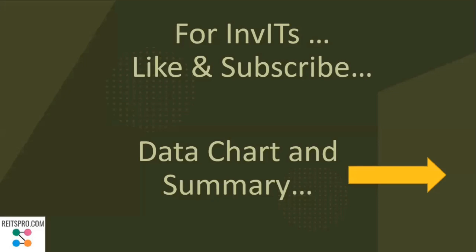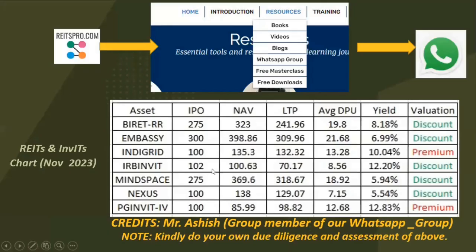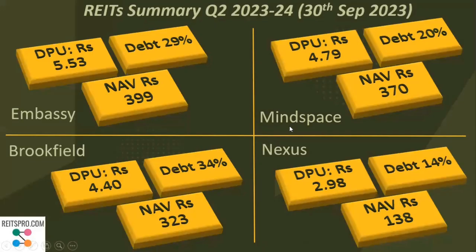If you want similar content for InvITs, do encourage us by liking and subscribing. Before closing, we have an interesting summary chart to share. On our site, under resources, there is a WhatsApp group for REIT and InvIT investors where members discuss various topics. A member shared a useful chart giving a snapshot of all REIT and InvIT instruments, which we are sharing here. The REIT summary as of 30th September 2023 outlines the DPU, debt, and NAV for all four REITs in a single snapshot.